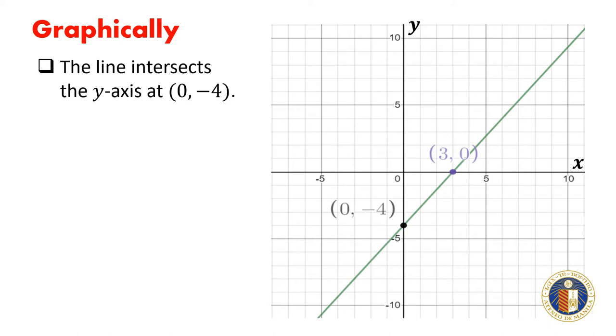The line intersects the y-axis at the point 0, negative 4. This verifies that the y-intercept is equal to negative 4.